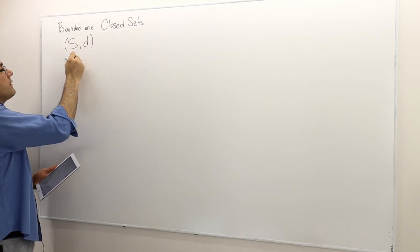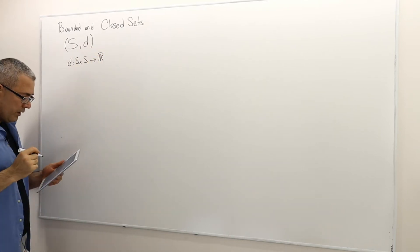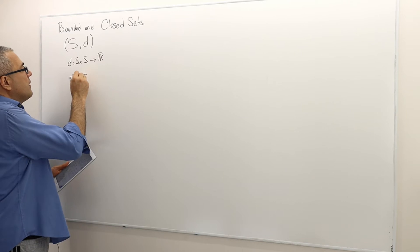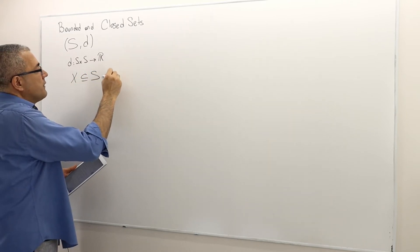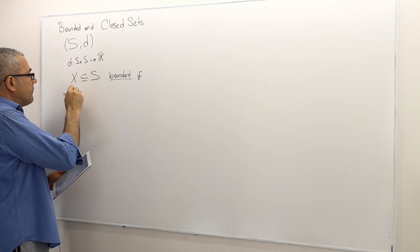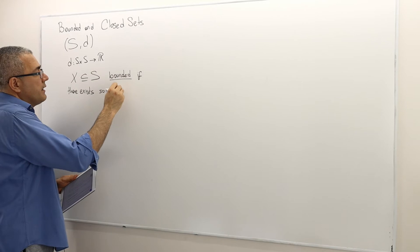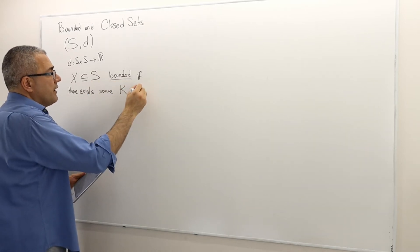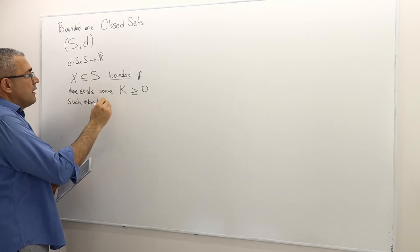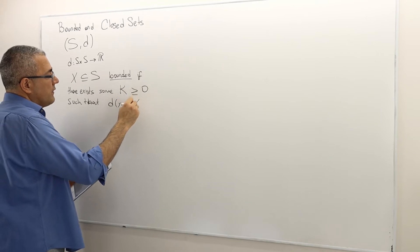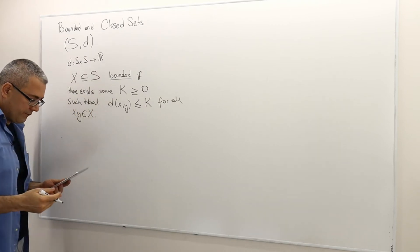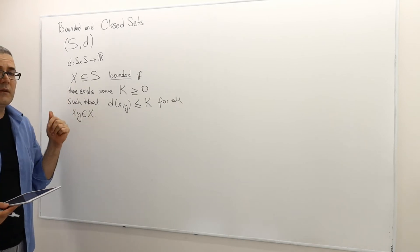We are going to start with some set S and a metric — a distance function — defined on this set. We call this a metric space. Any set X which is a subset of S is called bounded if there exists some number k, usually greater than or equal to zero, such that d(x, y) is less than or equal to k for all x, y in X.